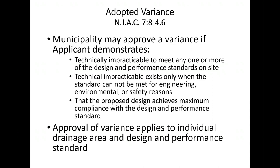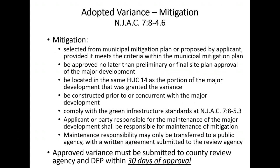Even with a variance, the applicant must still meet or maximize compliance with the design and performance standards on-site. For example, if 78% TSS removal can be achieved on-site, that must be done — only the remaining 2% can be addressed off-site via mitigation. The variance also applies only to the specific drainage area and specific standard for which it was granted; you still must meet all other standards in all other drainage areas on-site unless technically impracticable.